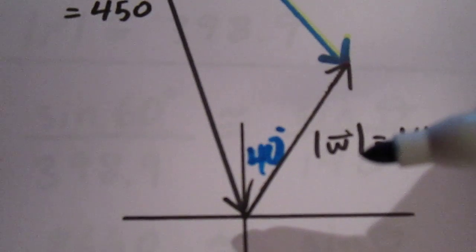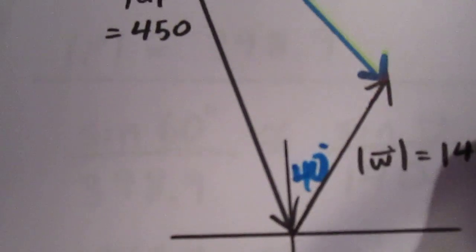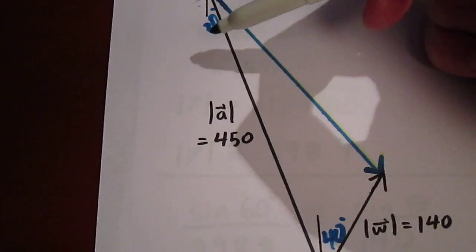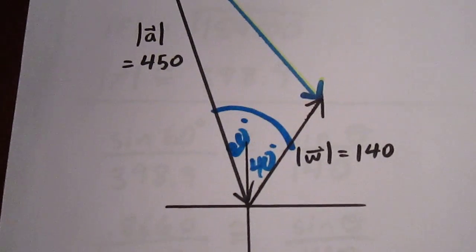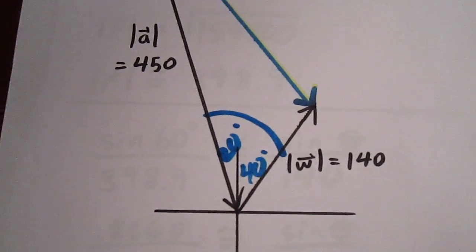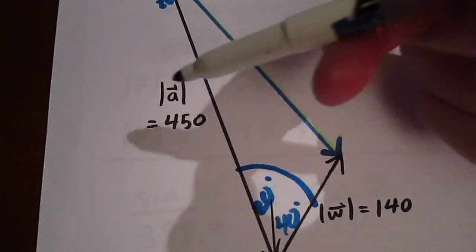And then we realize that we can use the Z pattern. This vertical line is parallel with this vertical line. So using the Z pattern, this 20 degree angle will be equivalent to this 20 degree angle. And what that does is it creates for us a 60 degree angle.